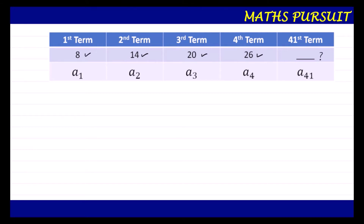First of all, we are going to find out the value of the 41st term. The most important formula is: a_n = a_1 + (n − 1) × d. We are going to use this formula. Before moving ahead, we require d because we know a_1 = 8 and n = 41, but we do not know d.